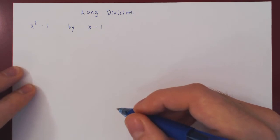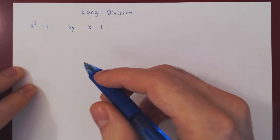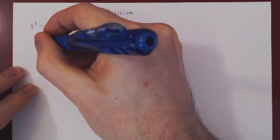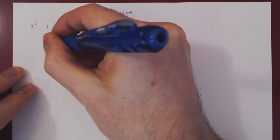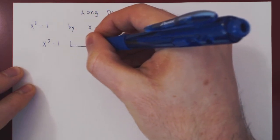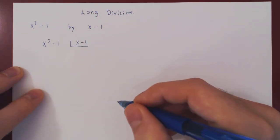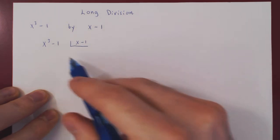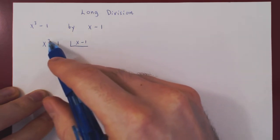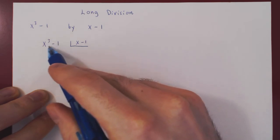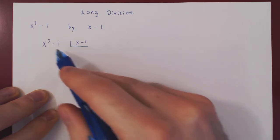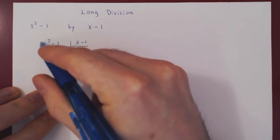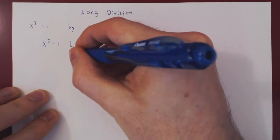Here is how you would write the long division if you went to a French high school. We want to divide x cubed minus 1 by x minus 1. Always write your two polynomials from the largest power of x to the smallest — in decreasing order of powers. We ask: what times x will give us x cubed? The answer is x squared.